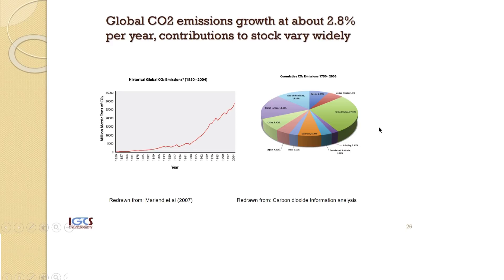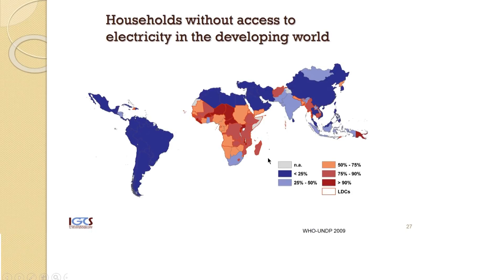That has been changing because India and China have been increasing their emissions well beyond historic limits. The challenge of developing countries increasing their greenhouse gases is also matched by another challenge they face: lack of adequate access to modern energy services, particularly electricity. Until recently, the cheapest way to produce electricity was from coal, which is a very greenhouse gas-intensive fuel.